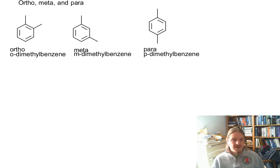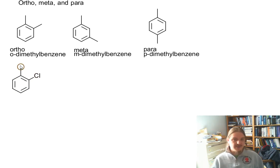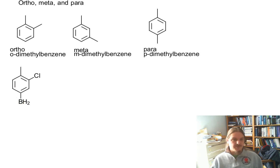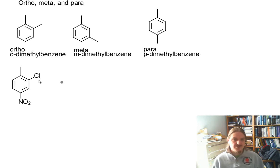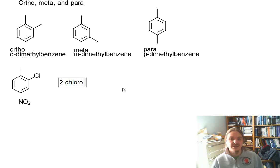Using these as part of a name is a little bit like using cis and trans — once the molecule gets complicated enough, you can't really use them as part of the name. So the name of this molecule is just going to have to be some kind of substituted benzene, and there's a methyl at 1, a chlorine at 2, and this nitro group at 4. And like always, we list the substituents in alphabetical order, not numerical order.